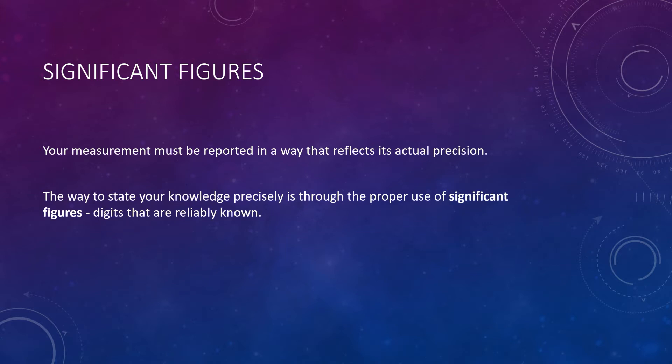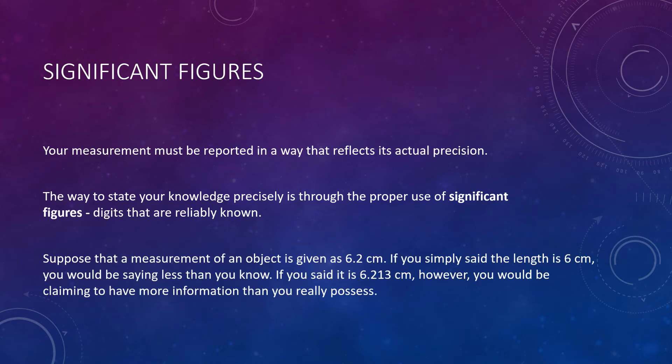Let's say in an experiment, something is found to be 6.2 centimeters in length. Well, if you later told another scientist, perhaps, that the length was 6 centimeters. Okay, well, it's around 6 centimeters, sure, but you know it to be 6.2. So you're actually telling the person less information than you know. In other words, you aren't being as precise as you actually were.